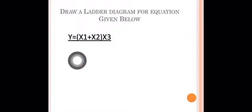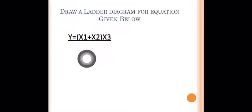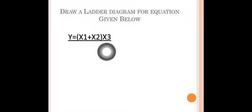Now we have an equation and a corresponding ladder diagram. Y is equal to (X1 + X2) · X3. That is our equation. So the output Y has X1 plus X2 as an OR function, and that result is multiplied by X3, which is an AND function.